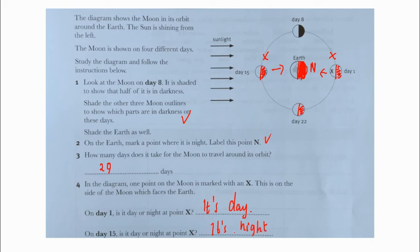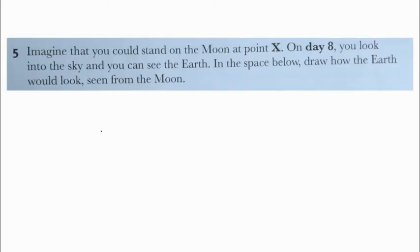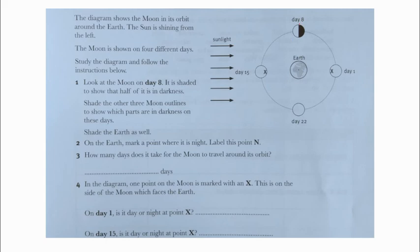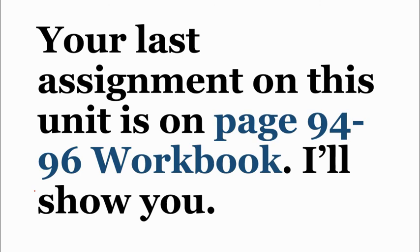Number five: Imagine you could stand on the moon at point X on day eight. You look into the sky and you can see the Earth in space below. Draw how the Earth will look seen from the moon. We are on X, seeing from the moon on day eight. We are here on the moon and we see the Earth. The Earth is half night and half day, so we see the Earth just like that.